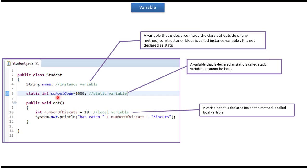Here I have defined the school code variable, and I have defined this variable as static. So this variable is a static variable. A variable that is declared as static is called a static variable. It cannot be local.